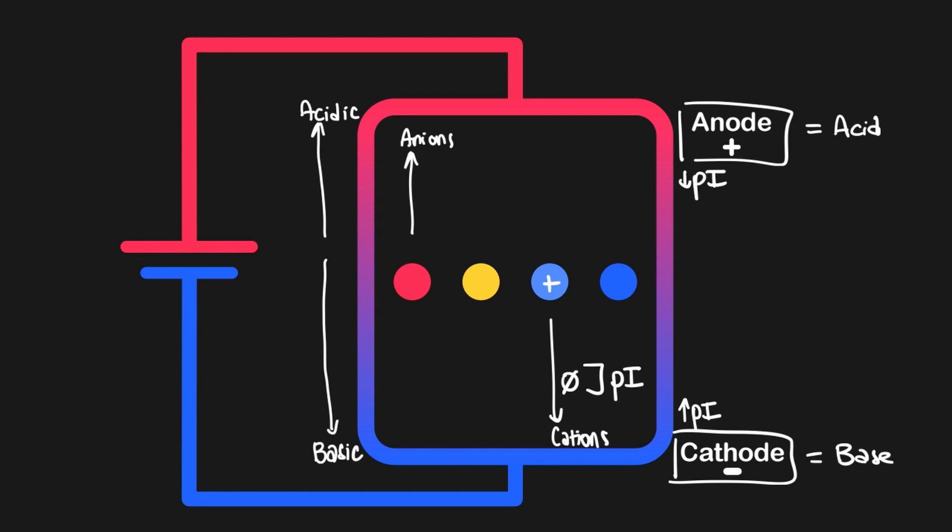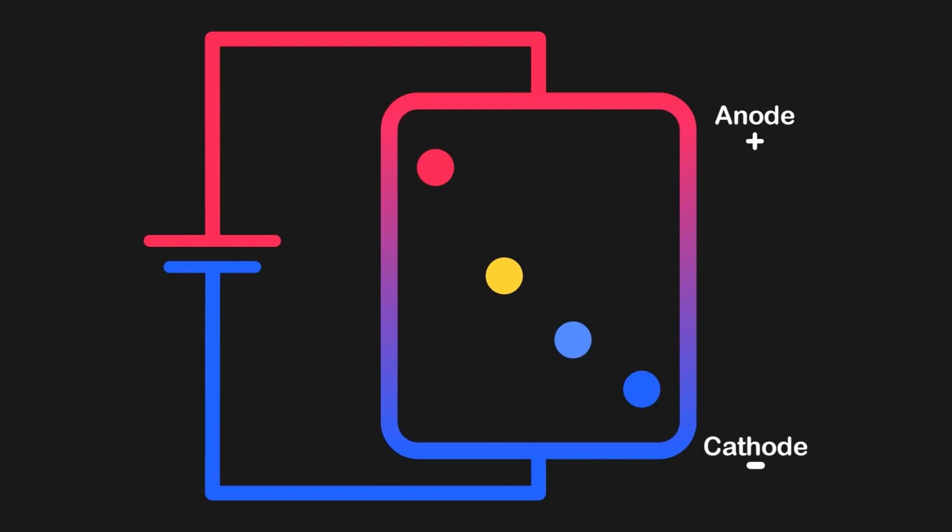For example, let's say we had the following gel. In this gel, all of the samples were initially placed in a central well at pH 7, then allowed to run on the gel. Their final positions as seen here tells us a lot about their charges. For example, the dark and light blue samples have migrated towards the cathode, meaning they must have been positively charged at neutral pH.